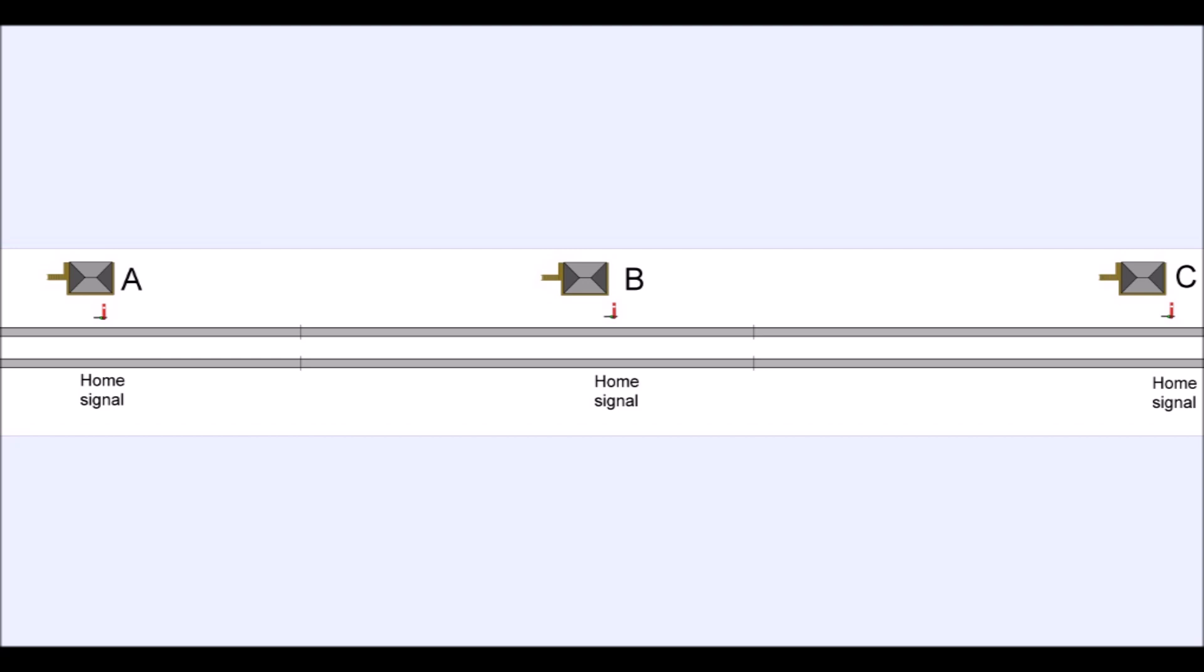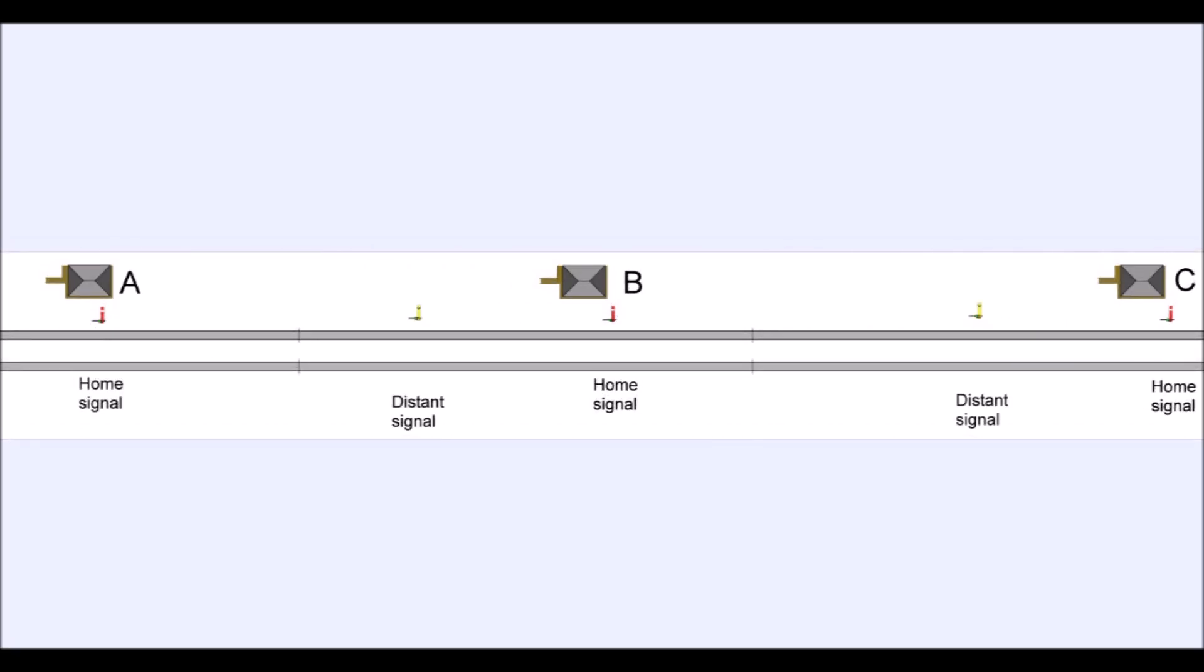So what happened is that we had the introduction of what we call distant signals. These are the yellow ones. These are the caution signals that tell you what the red signal further down the line is going to do. So the distant signal would be on, that is in the level position, and the driver would think, hang on a minute, the distant is on, therefore the red stop signal must be on, therefore I must slow down and be prepared to stop at the next red signal. That's what distance do.